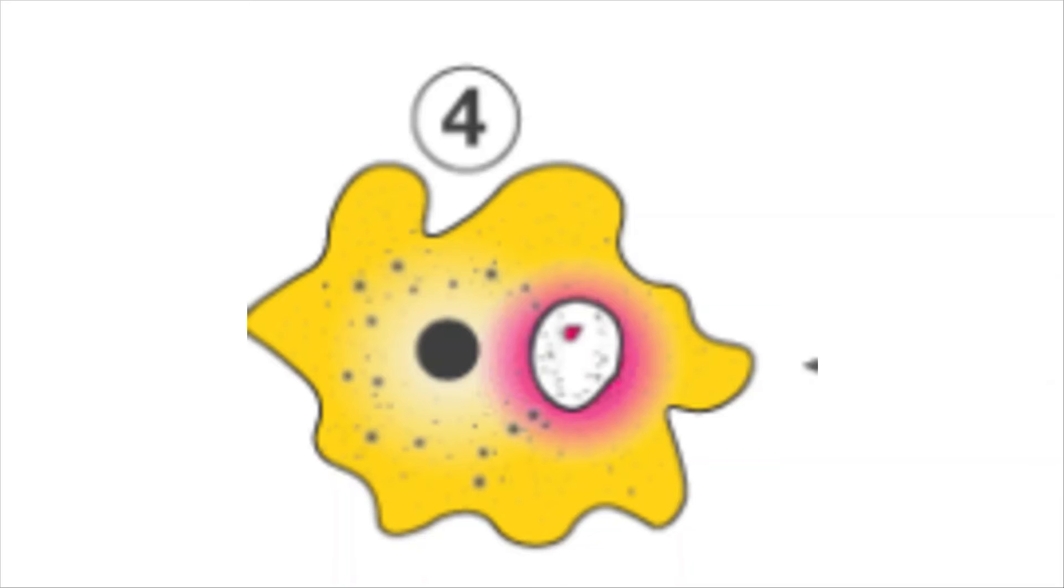Assimilation: Assimilation is the process of obtaining energy from the absorbed food molecules. In amoeba, absorbed food molecules are utilized for producing the energy required to carry out different life processes within the cell.